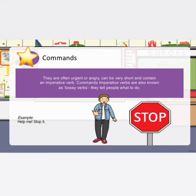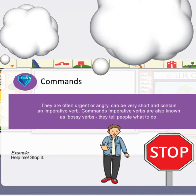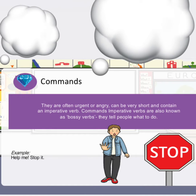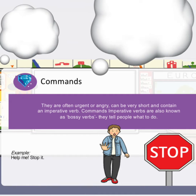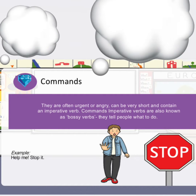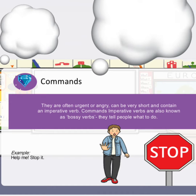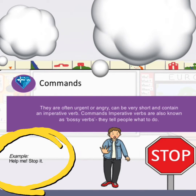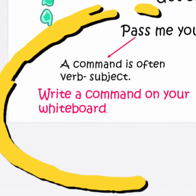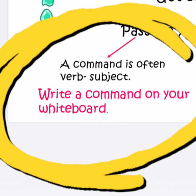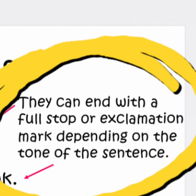Next are commands, otherwise called imperative sentences. These types of sentences are often urgent or angry, can be very short, and contain an imperative verb. They are very bossy and usually tell people what to do. For example: 'Help me. Stop it. Get out.' A command usually begins with a verb.